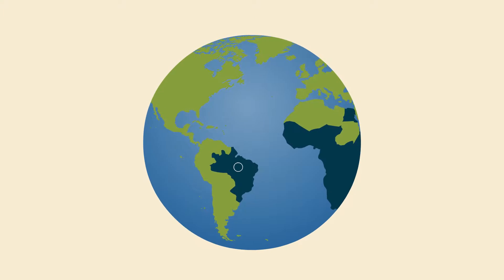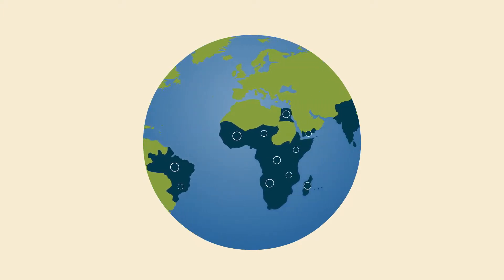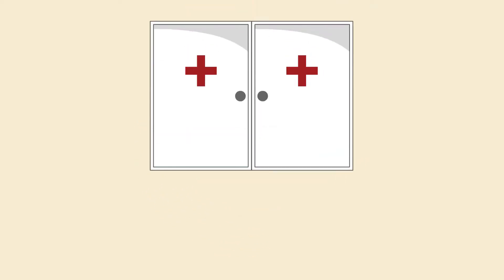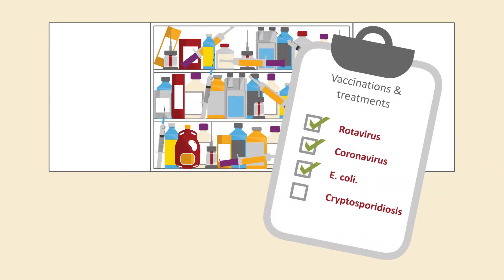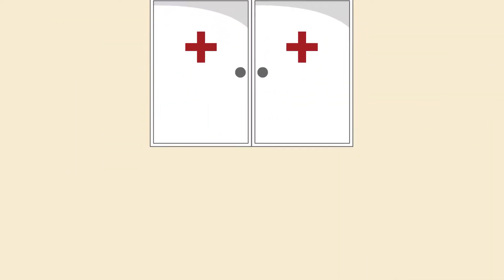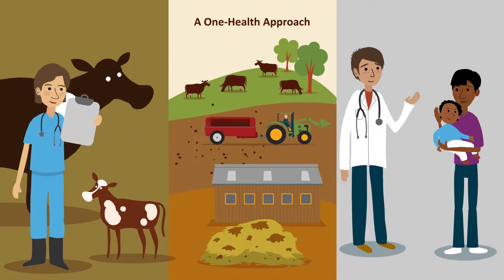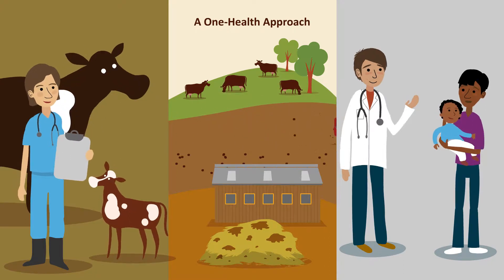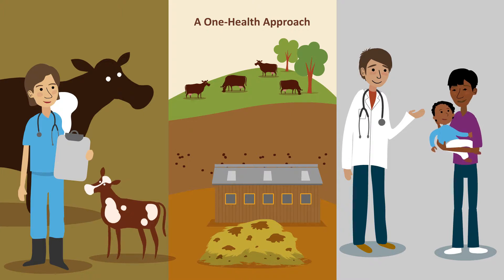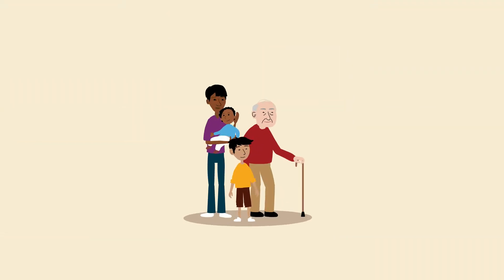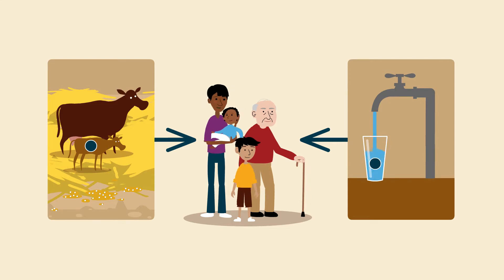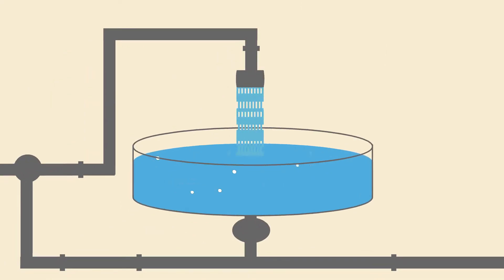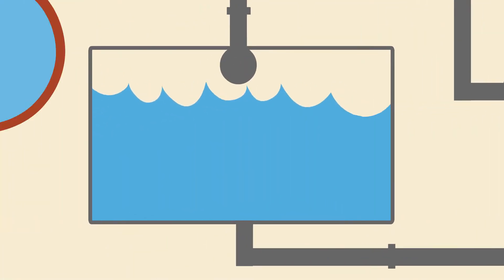Cryptosporidiosis is a worldwide problem in people, with the most severe illness seen in developing countries. Other important diarrhoea-causing pathogens have effective vaccinations and treatments available for people, whereas there are no such medications for crypto, which illustrates the importance of further research. A One Health approach to tackling cryptosporidiosis — involving veterinary, public, and environmental health — would bring great benefits to help reduce disease and limit transmission of the parasite. Routes of transmission to people include direct contact with infected animals and through contaminated drinking water. Crypto is a global problem for the water industry, as it is not killed by chlorination, and its microscopic size makes treatment in water plants difficult.